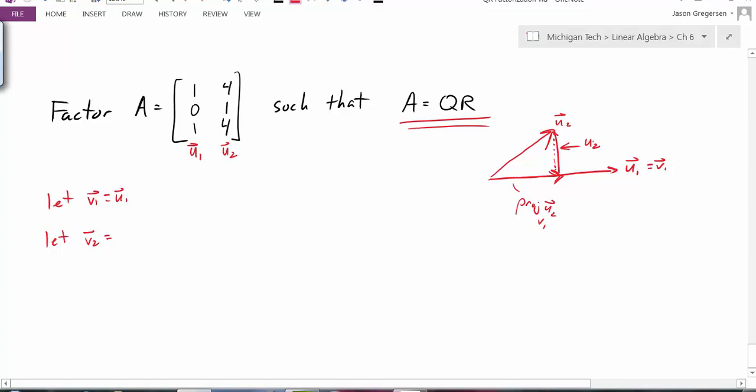And then the vector that's orthogonal to V1 will be this vector right here. And that will be U2 minus the projection of U2 onto V1. That's our little graphical representation that helps remind us of what that formula is.